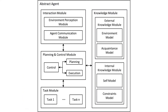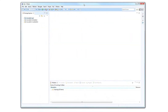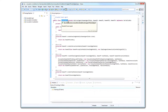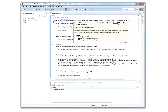The DIVAS abstract agent consists of an interaction module to handle agent perception and communication, a knowledge module to store the agent's knowledge, a task module for managing the agent's tasks, and a planning and control module, which serves as the brain of the agent. For instance, to create a virtual agent, the modeler has to create a concrete class extending from the abstract agent provided by DIVAS and realize the agent abstract modules.